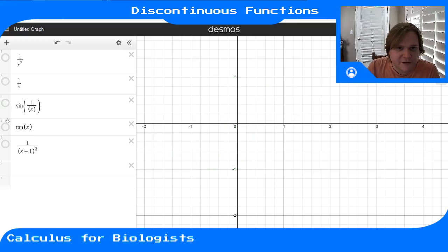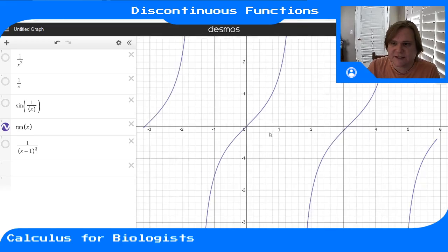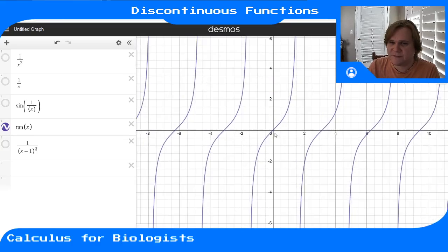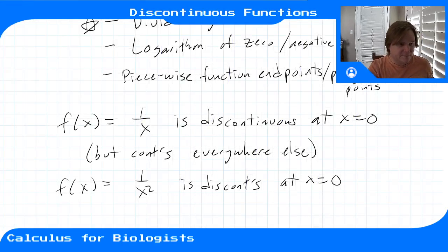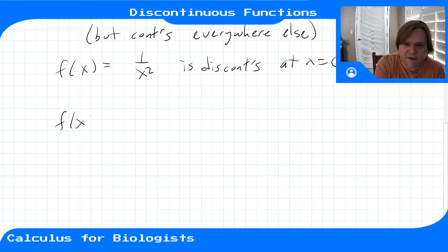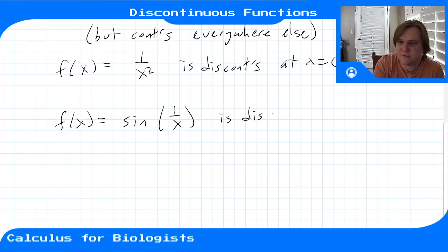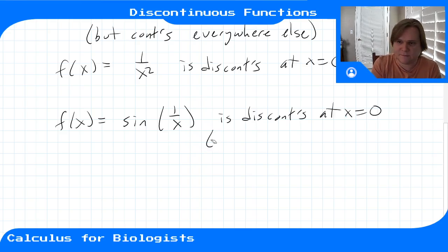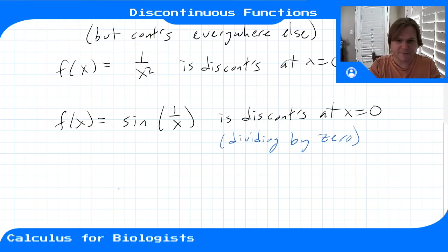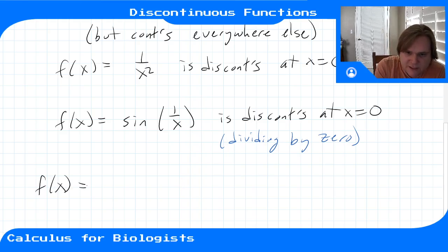Another one that is piecewise defined would be tangent of x — a discontinuous function. If you zoom out, you see that these are asymptotes. So again, we're dividing by zero. f(x) = sin(1/x) is discontinuous at zero for the same reason: dividing by zero is a bad thing. And tangent of x is also discontinuous at certain points.